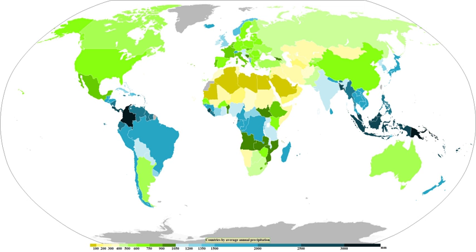The likelihood or probability of an event with a specified intensity and duration is called the return period or frequency. The intensity of a storm can be predicted for any return period and storm duration from charts based on historic data for the location. The term '1 in 10-year storm' describes a rainfall event which is rare and is only likely to occur once every 10 years, so it has a 10% likelihood any given year. The term '1 in 100-year storm' describes a rainfall event which is extremely rare and will occur with a likelihood of only once in a century, so has a 1% likelihood in any given year. As with all probability events, it is possible though unlikely to have two 1-in-100-year storms in a single year.